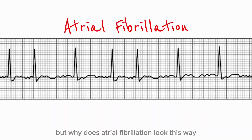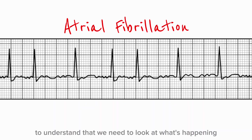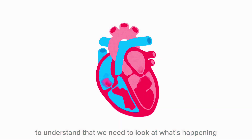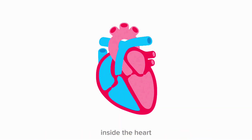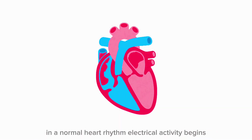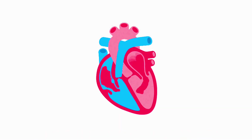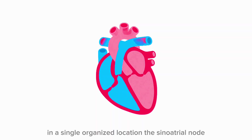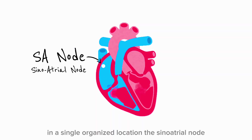But why does atrial fibrillation look this way? To understand that, we need to look at what's happening inside the heart. In a normal heart rhythm, electrical activity begins in a single organized location: the sinoatrial node.